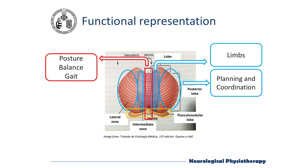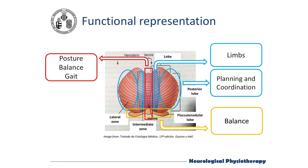The intermediate zone regulates the coordination of limb movements, especially in the more distal areas such as the hands and fingers. The lateral zone regulates the general organization of motor activities, synchronization and planning of general voluntary movements. Finally, a lower region is formed by the flocculonodular lobes, which are below the posterior cerebellum. It is the most archaic part of the cerebellum and it develops at the same time as the vestibular system, so they work together to control balance, and it also influences oculomotor coordination.